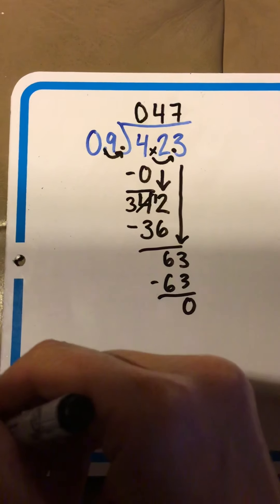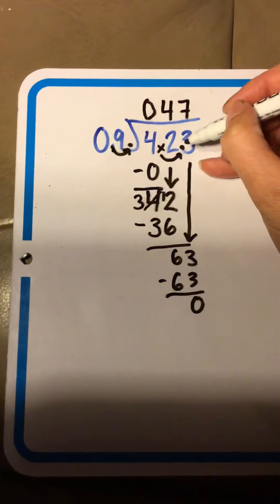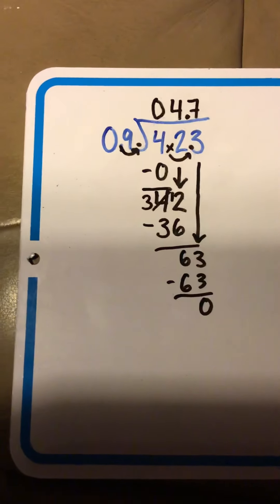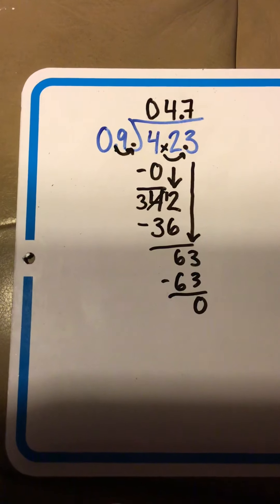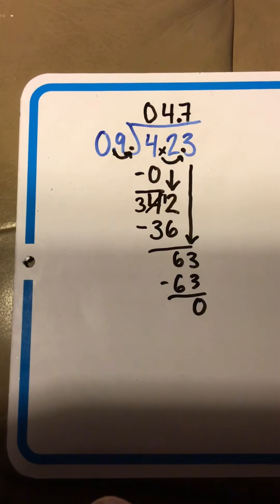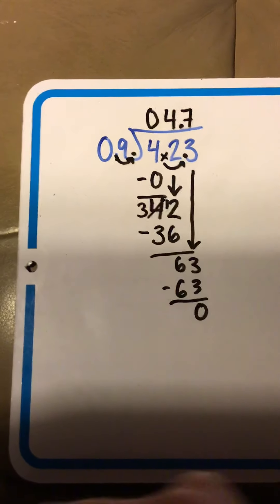Last thing, we're going to float up the decimal balloon. So, now, if you had 4.23 cookies and you shared it with 0.9 people, each person would get 4.7 cookies. Alright.